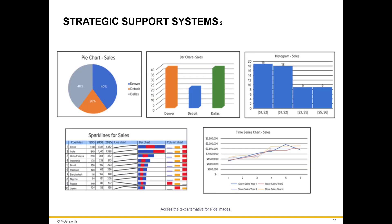Visualization provides a graphical display of patterns and complex relationships in a large amount of data. Executive information systems use visualization to provide key information to top managers at a glance with little or no interaction with the system. The most common charts used for visualizations include pie chart, bar chart, histogram, spark line, and time series chart.